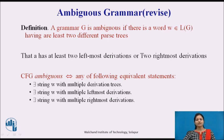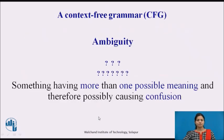An ambiguous grammar can be defined as a grammar G is ambiguous if there is a word having at least two different parse trees. This means a word can be derived with the help of two derivations — two leftmost derivations or two rightmost derivations. In other words, any string W having multiple derivation trees, multiple leftmost derivations, or multiple rightmost derivations indicates ambiguity — something having more than one possible meaning and therefore possible confusion.